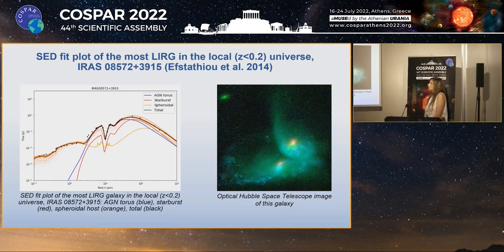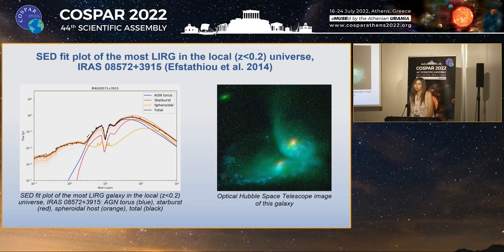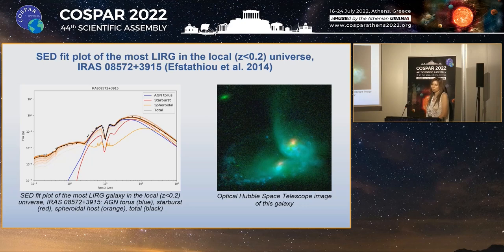I selected to include in this presentation an SED fit plot of the most luminous infrared galaxy in the local universe, discovered by Eustatio et al. in 2014. This is an example of an interacting LIRG which exhibits one of the deepest silicate absorption features observed in a galaxy. According to our fit, this is an AGN-dominated object.